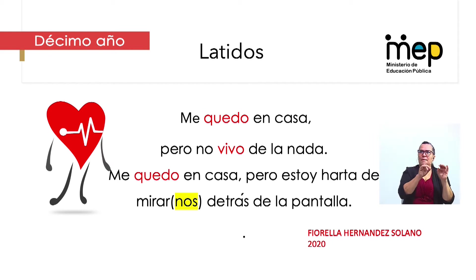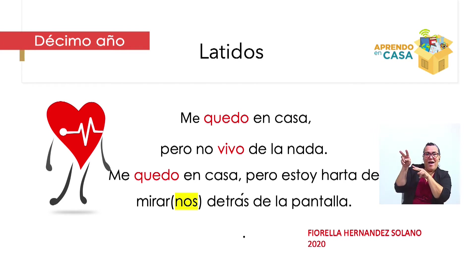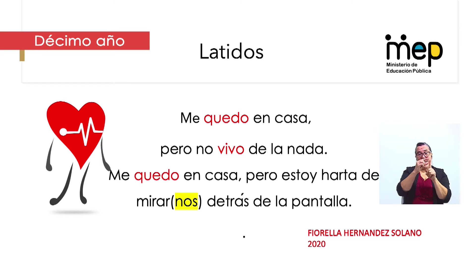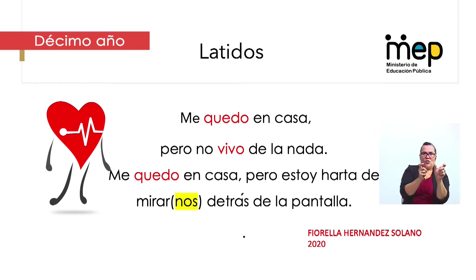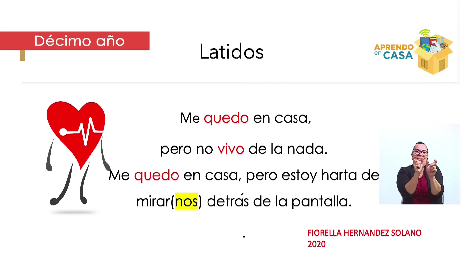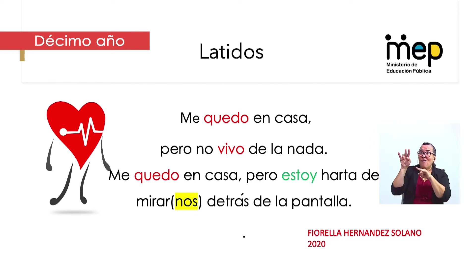Lo que pasa con 'mirarnos' es que no es un verbo. En el repaso hablamos de formas no personales: se parecen mucho a los verbos, pero no son verbos. La palabra 'mirarnos' está integrada por dos elementos: 'mirar', que es un infinitivo — -ar, -er, -ir —, y 'nos', que es un pronombre que se integra al infinitivo, pero no es verbo. ¿Habrá otro por ahí, Marcela? 'Estoy'. Muy bien. Este verbo 'estoy' es un verbo de estado.